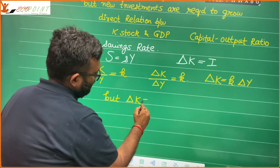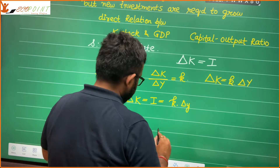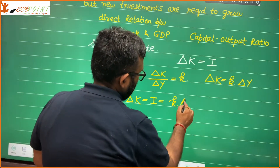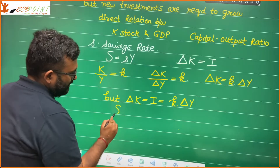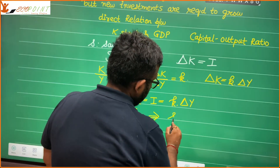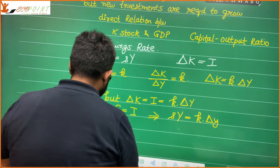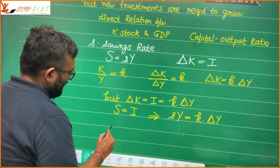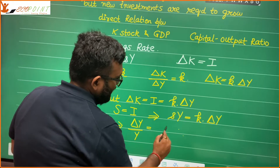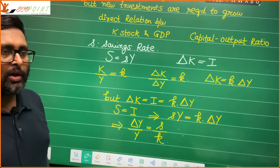Delta K is equal to investment, and delta K is equal to small k times delta Y. Since savings is equal to investment, that would mean small s times Y is equal to small k times delta Y. And this would mean that I can write delta Y upon Y as small s upon small k.